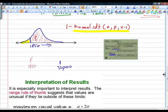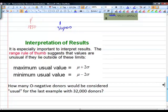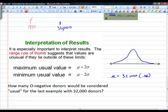For the interpretation of the results, remember we said that as long as you're within two standard deviations of the mean, we consider that to be a usual value. Here's our normal distribution. The mean is going to be a number in the middle. For our 32,000 blood donors, what would the mean be? 6% of 32,000 is 1920. The standard deviation is the square root of npq.